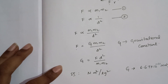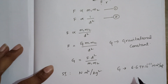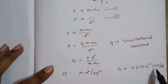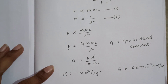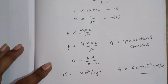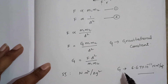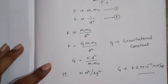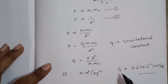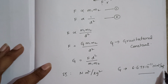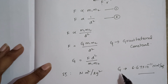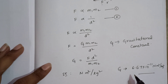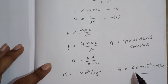G is known as a universal constant. Everywhere in the universe, the value of G is constant. This capital G value does not depend on the masses, and it does not depend on the distance between the two bodies. Everywhere, this value is constant.